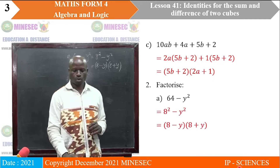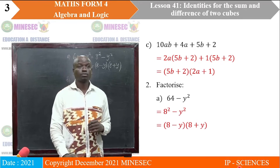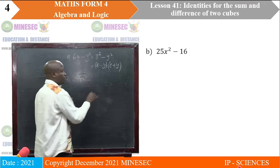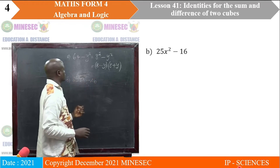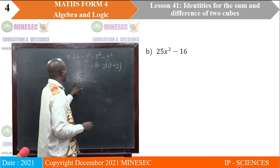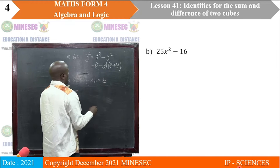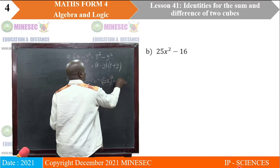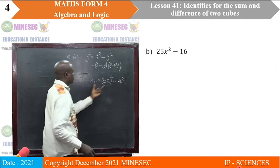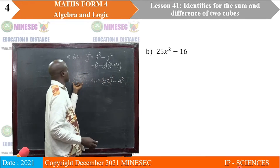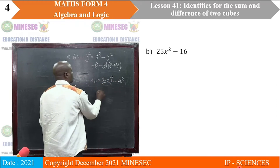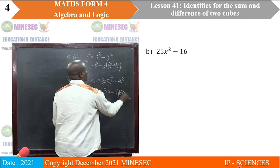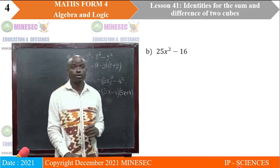The next expression is 25X squared minus 16. This is also a perfect square. We write 25X squared as 5X all squared, and 16 as 4 squared. So we have 5X all squared minus 4 squared. The factorization gives us 5X minus 4 into 5X plus 4.